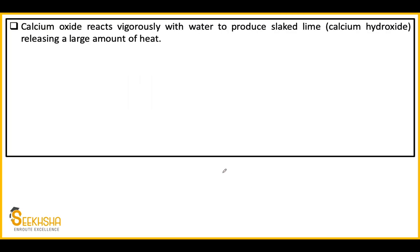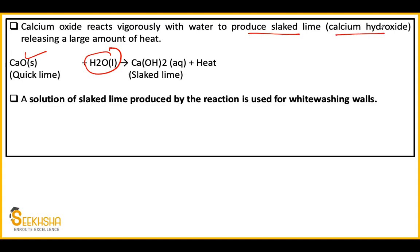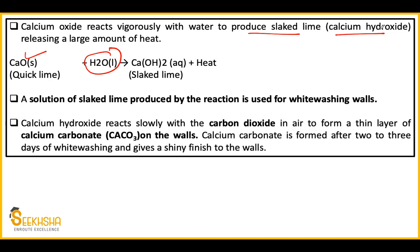We have seen this solution before. CaO (calcium oxide) reacts with water to ultimately produce slaked lime — Ca(OH)2. This slaked lime is used for whitewashing of walls. Calcium hydroxide reacts with CO2 present in air to form calcium carbonate on the walls. This calcium carbonate gives the shiny finish. We have already studied this in lecture 8 — nothing new here.